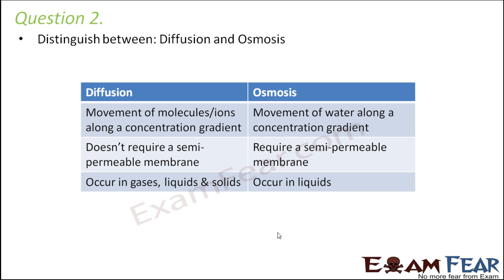Question: distinguish between diffusion and osmosis. Osmosis is a type of diffusion. Diffusion is the movement of molecules and ions along a concentration gradient — from high to low concentration — and can happen in gases, liquids, and solids. Osmosis is specifically the movement of water along a concentration gradient, occurs only in liquids, and always requires a semi-permeable membrane, which selectively allows some substances to pass through.